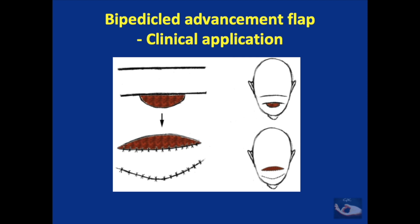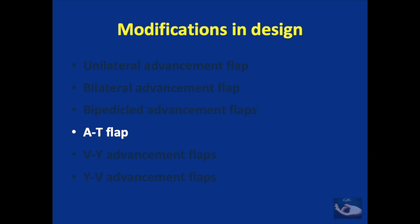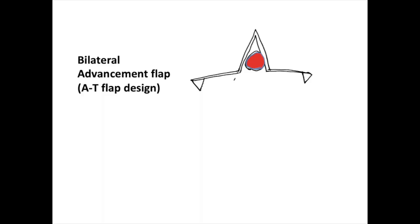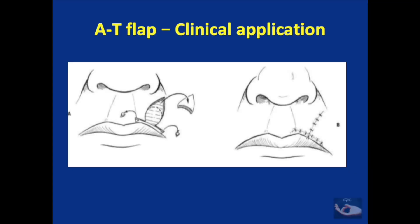The next modification is the A to T flap. The circular defect shown is converted into a triangular defect, and flaps are raised from both sides to advance to cover the defect. Excision of Burow's triangle on both sides may be done to enhance the advancement of the flaps. The final suture line usually settles in this pattern. This design of advancement flap is usually selected for areas where one side is an important landmark, like the upper lip vermilion or the eyebrows.